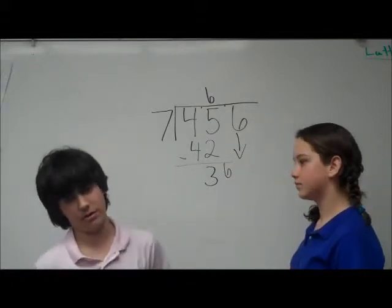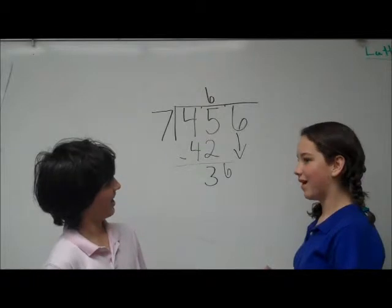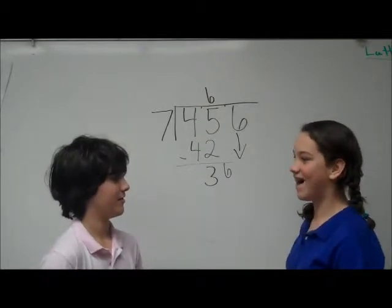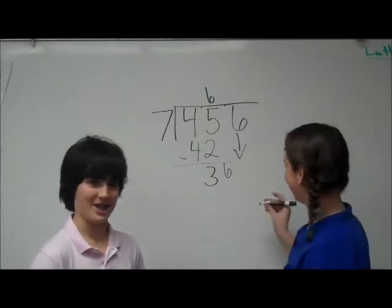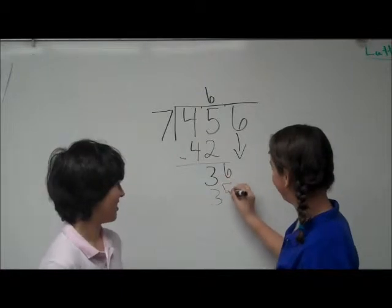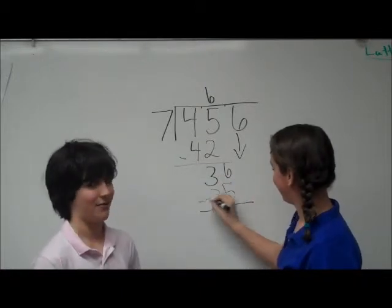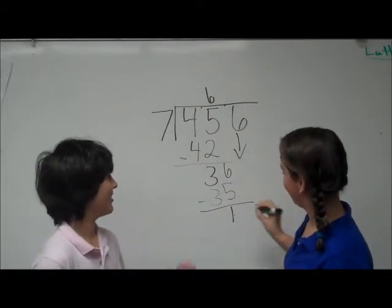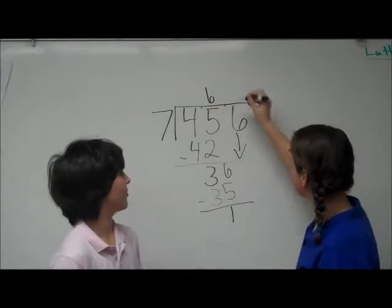Now how many times can 7 go into 36? 5 times. So let's do 35, because 7 times 5 is 35. Now we have to put the 5 over the 6.